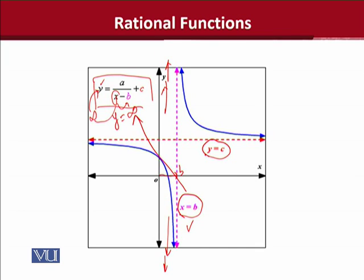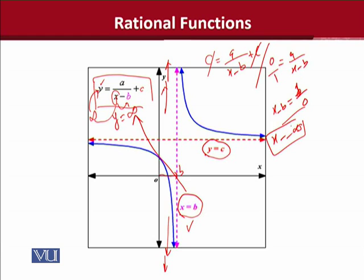And now if I choose c as the value of y. If I put it here, it will become something like this. c is equal to a over x minus b plus c. Once I cancel these out, it becomes zero. Zero is equal to a over x minus b. And this will become x minus b is equal to 1 over zero. And something over zero becomes infinity, and the consequence will be infinity.